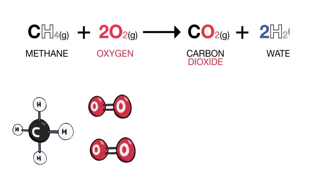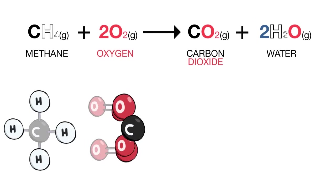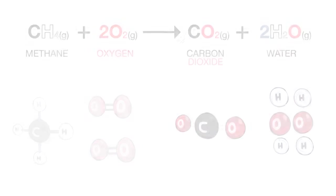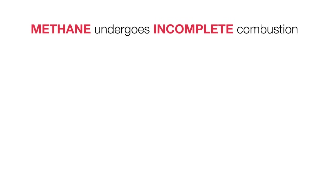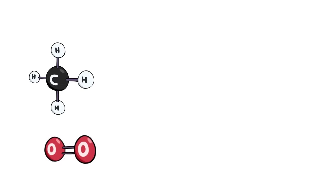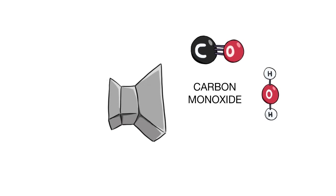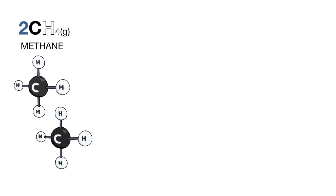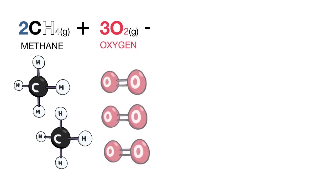When methane undergoes incomplete combustion, that's in a limited supply of air, it produces either carbon monoxide and water, or carbon and water. As shown by the equations: 2CH4 gas plus 3O2 gas gives 2CO gas plus 4H2O gas.